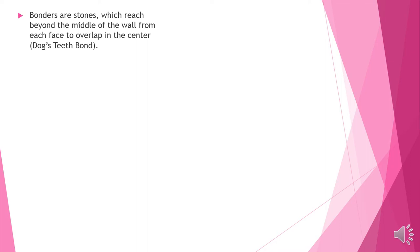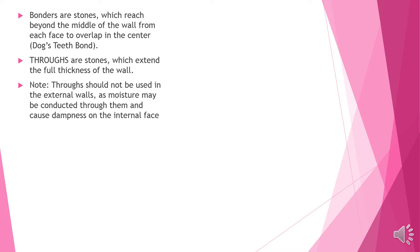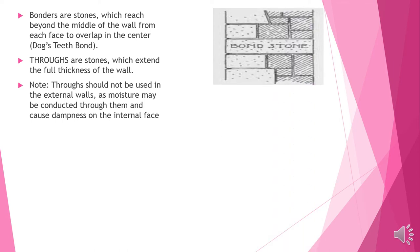Bonders are stones which reach beyond the middle of the wall from each face to overlap the center — also called dog's teeth bond. Thoroughs are stones which extend the full thickness of the wall. Note: thoroughs should not be used in external walls as moisture may be conducted through them and cause dampness on the internal walls.